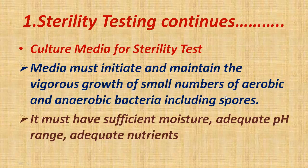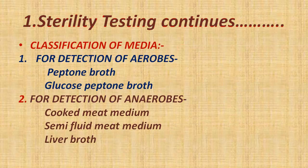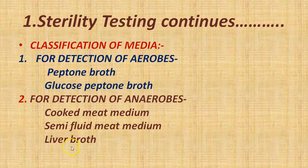The nutrient media must have sufficient moisture, proper pH, and adequate nutrients. For detection of aerobic microorganisms, peptone broth and glucose peptone broth are used. For anaerobic microorganisms, cooked meat nutrient medium, Sabouraud fluid meat medium, or liver broth is used. For both aerobic and anaerobic microorganisms, fluid thioglycolate medium, thioglycolate broth, corn steep liquor, or sodium thioglycolate medium is used. For detection of anaerobic and lower fungi, soybean casein digest medium or Sabouraud's fluid medium is used.